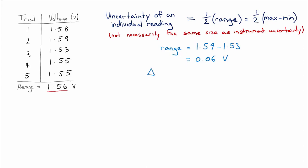So our uncertainty on our voltage, which we symbolize with that triangle there, is half the range, which equals 0.03 volts.